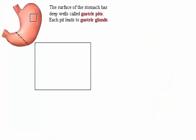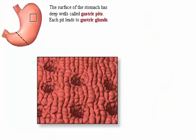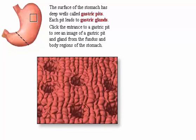The surface of the stomach has deep wells called gastric pits. Each pit leads to gastric glands typical of the fundus and body regions of the stomach.